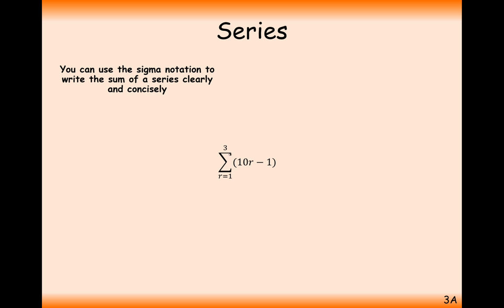This symbol here is the Greek capital letter sigma. It's a shorthand notation for adding together lots of different values. The way that you work out what values you're adding together is you substitute in the number 1 in the first case into your piece of algebra. The first term we're going to be adding together is 9: 10 times 1 take away 1 gives you a 9. Then we work through all of the numbers up to the top number, continually substituting them in to wherever r is in the piece of algebra next to our summation.